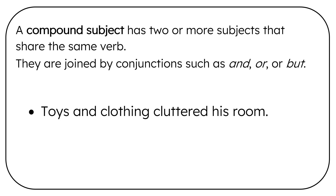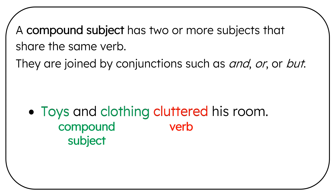Toys and clothing cluttered his room. I like to find the verb first — that's cluttered. Then ask what cluttered? Toys and clothing. Toys and clothing are a compound subject joined with the conjunction and.